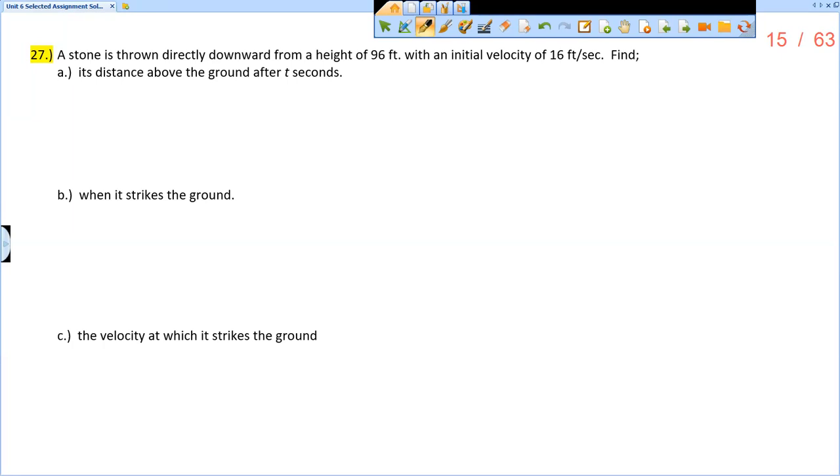This is the solution video for section 6.1, problem number 27. A stone is thrown directly downward from a height of 96 feet with an initial velocity of 16 feet per second. Find its distance above ground after t seconds.